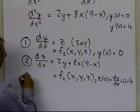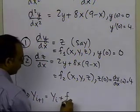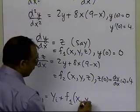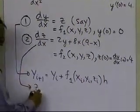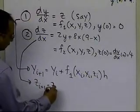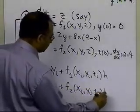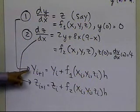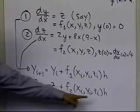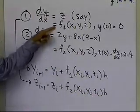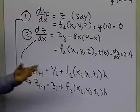From the first equation, the Euler update gives y(i+1) equal to y(i) plus f1(x_i, y_i, z_i) times h. From the second equation, z(i+1) equals z(i) plus f2(x_i, y_i) times h, where h is the step size. We know the initial values of x, y, and z, and we know f1 and f2, so we calculate y and z step by step until we reach x equal to 9.